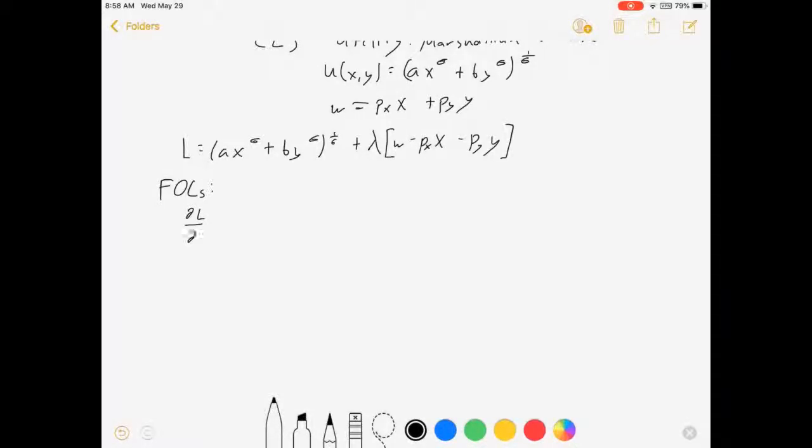dL/dx equals 0 implies 1 over sigma times (ax^σ + by^σ) to the (1-σ)/σ. That's 1 over sigma minus 1. And then we've got a chain rule. Do the inside: sigma a x^(σ-1) equals lambda px.